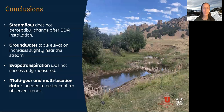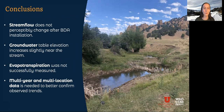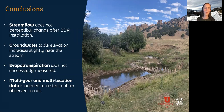To conclude, stream flow does not perceptibly change after BDA installation, but groundwater table elevation does increase slightly near the stream. Evapotranspiration was not successfully measured, but it is something we want to be thinking about going forward. We need multi-year and multi-location data to better confirm these observed trends. But overall, I think it's a win that we don't lose stream flow — that is good news for both people trying to restore these streams as well as the folks downstream who have water rights. The groundwater storage can also be a good thing, because if we store water during periods of high runoff, we can use that water later — it'll seep back out of the ground and into the stream later in the season, as long as the water stays in the ground and isn't drawn up by plants.